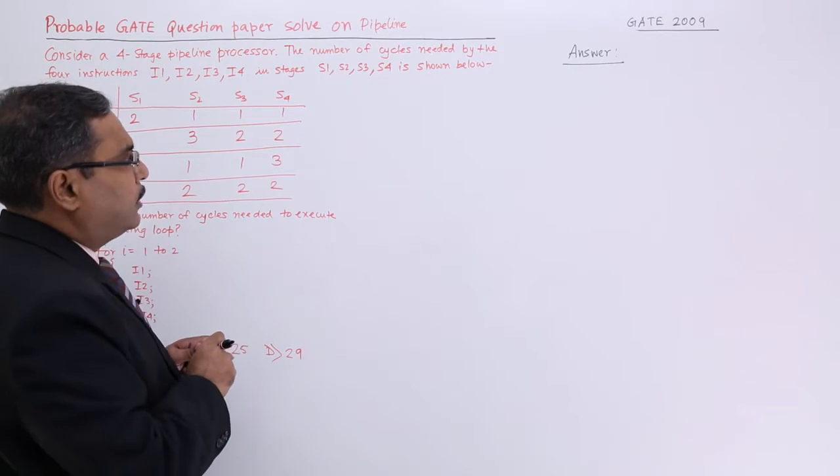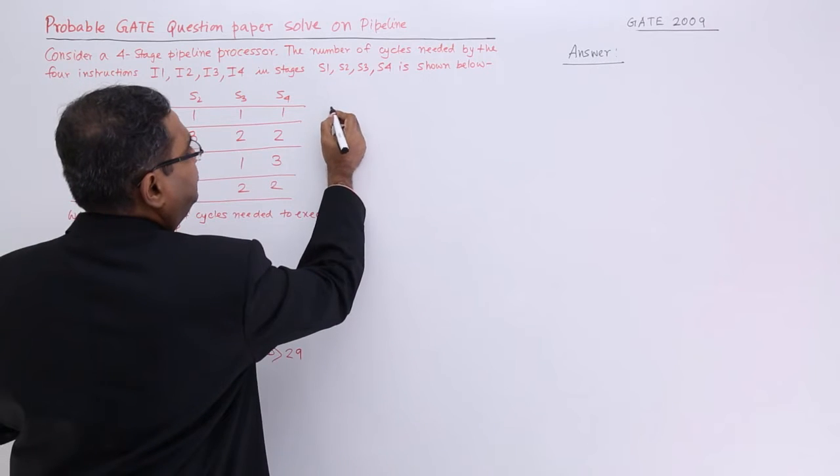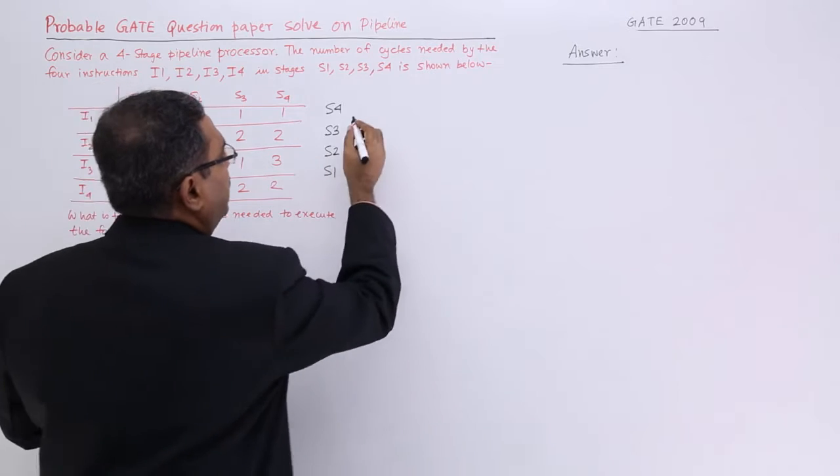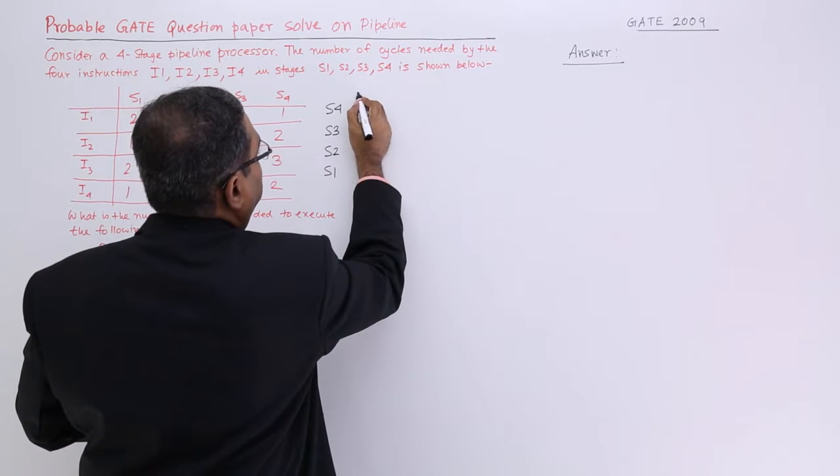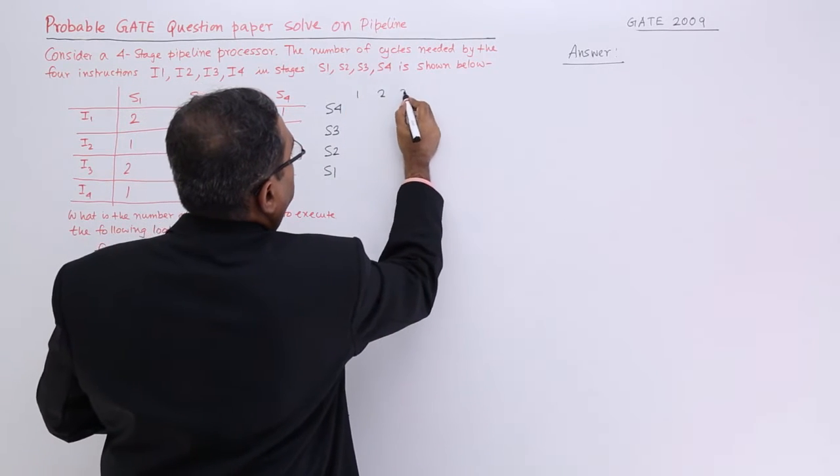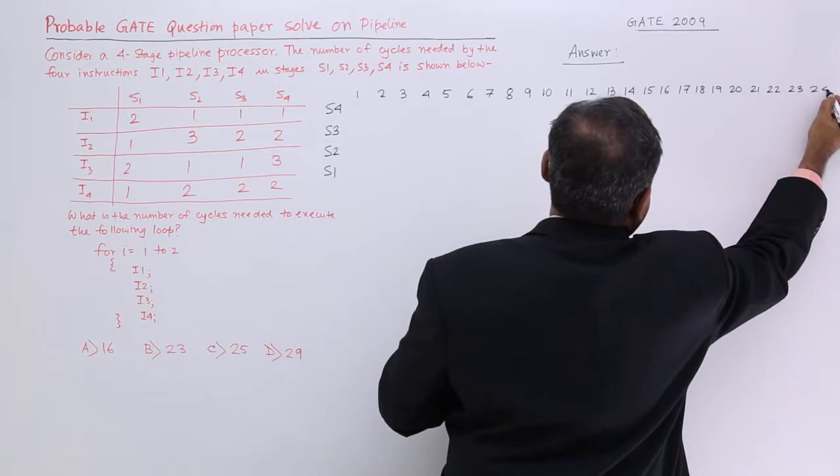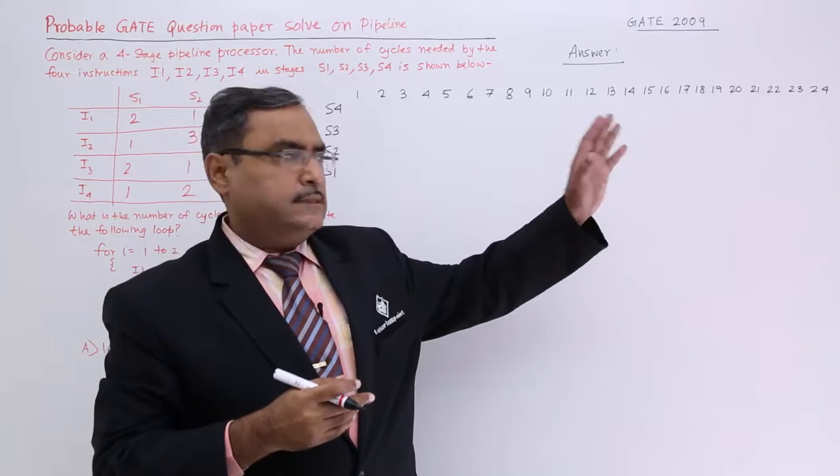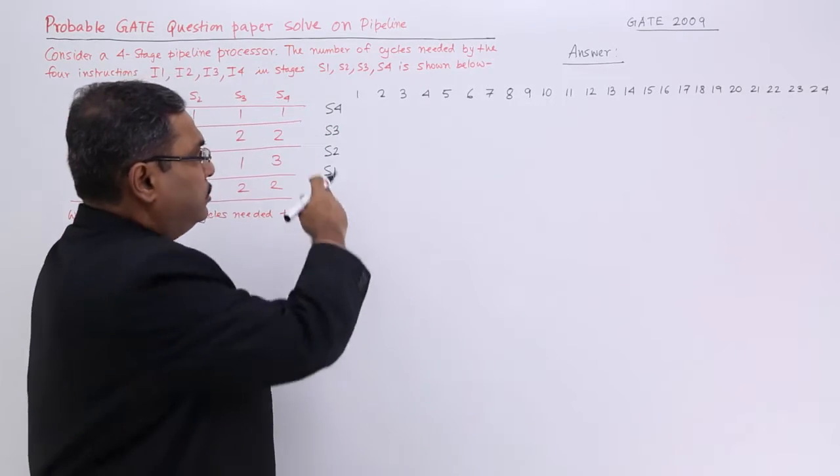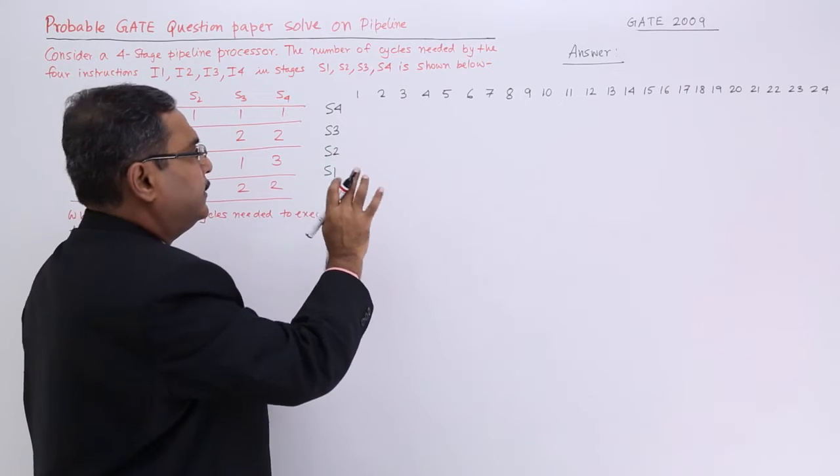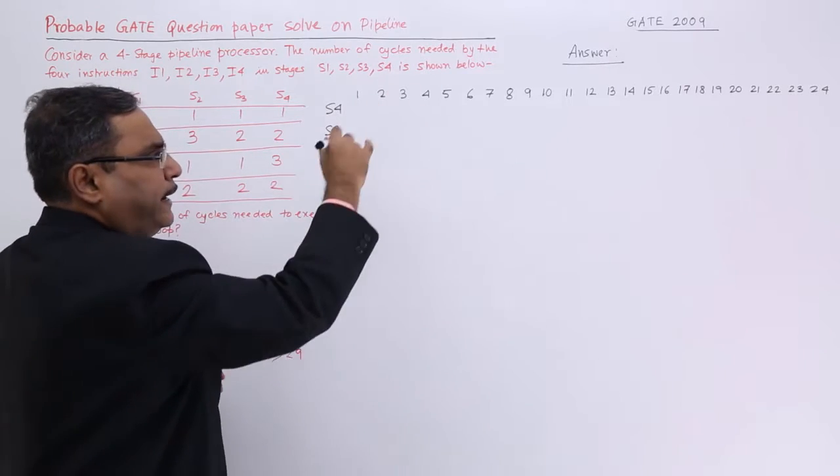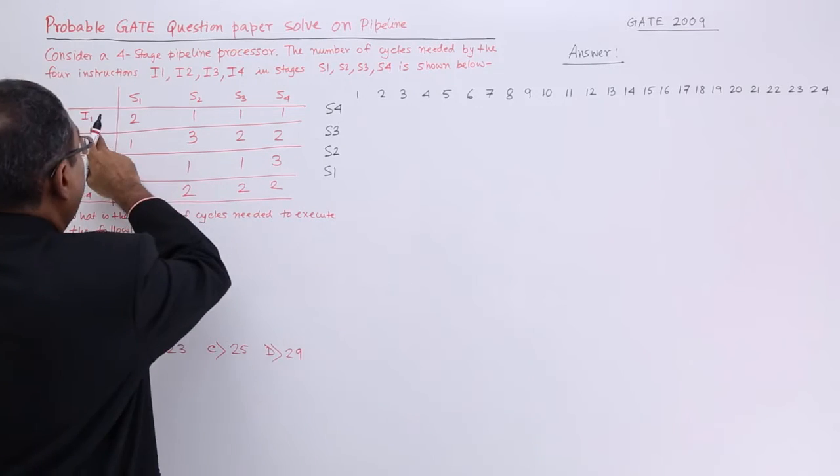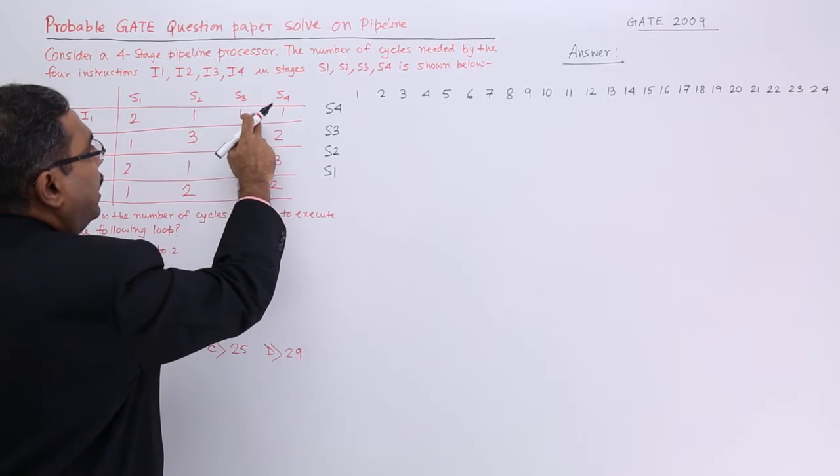How to solve such problems? I am writing S4 at the top, S3, S2, and S1. Here we are having the cycles. 1, I do not know how far I should proceed. Let us have up to 24. These are the stages. I am not drawing any line, I am just writing because in exam also you may not get enough time. I1 will be 2, 1, 1, 1.